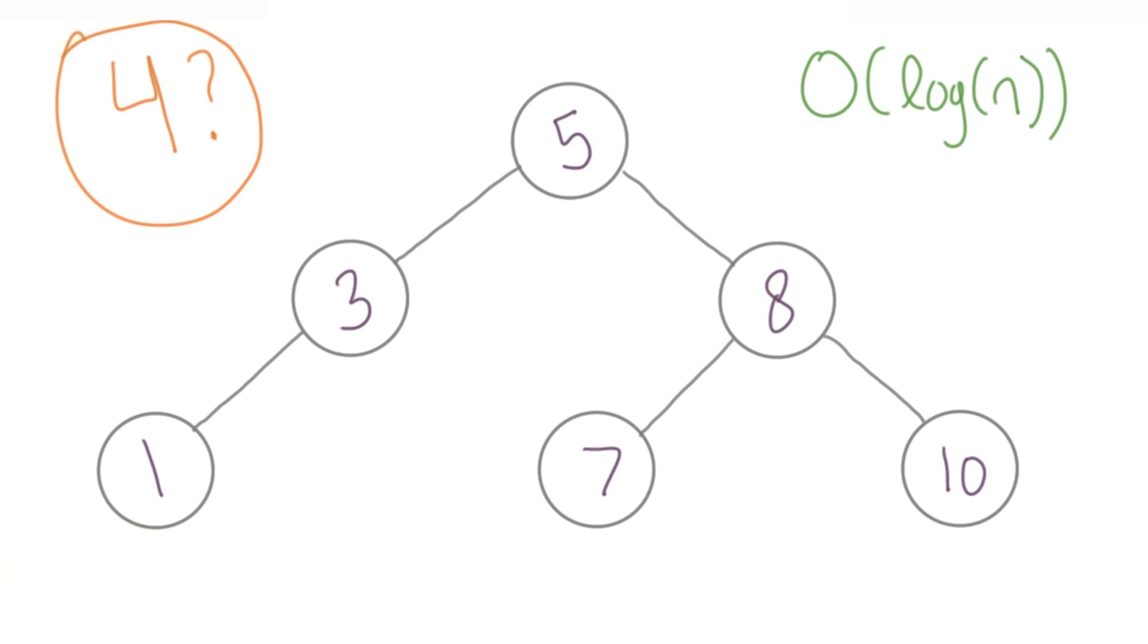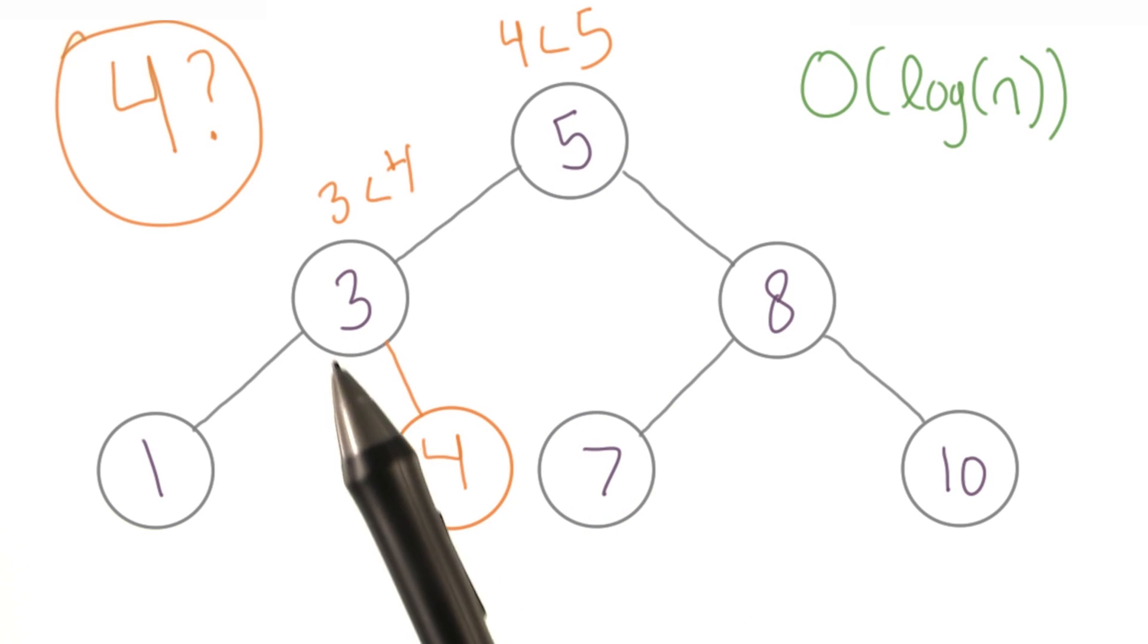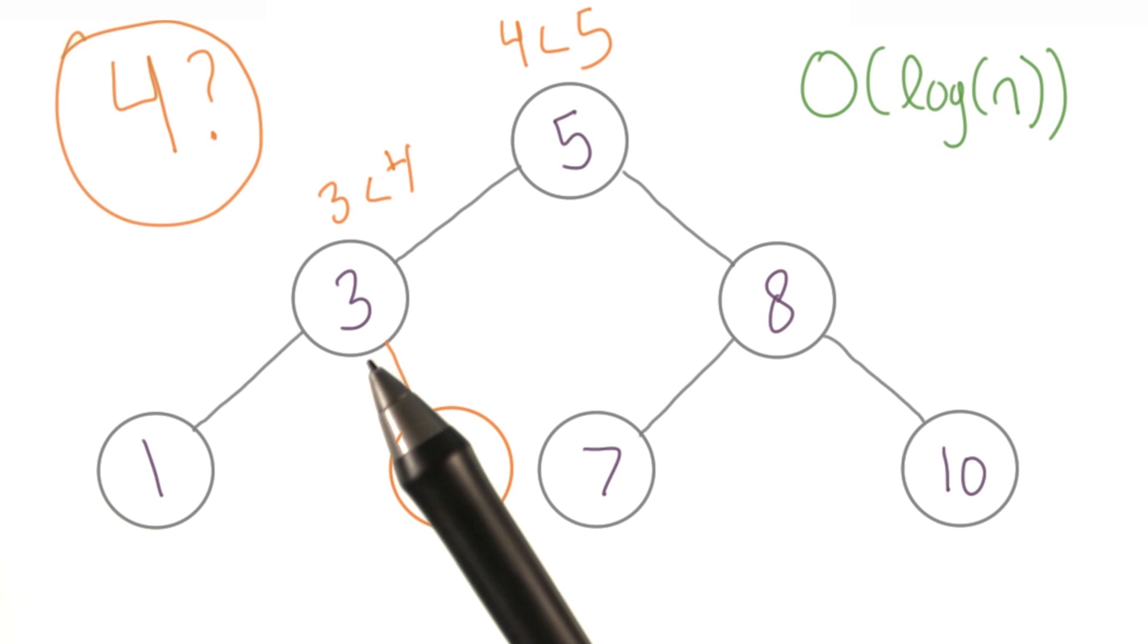Inserting in a binary tree is pretty much the same process. You start at the top, and you can make quick decisions about where to look at each step by comparing to the element you want to add. Eventually, you'll hit that open spot in the tree. As long as you compared your element correctly at each step, you can put your new element there and not violate the core BST properties.